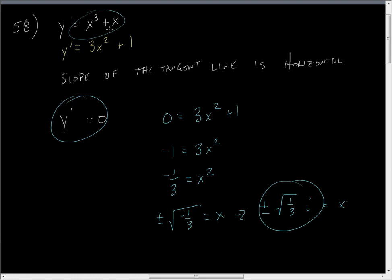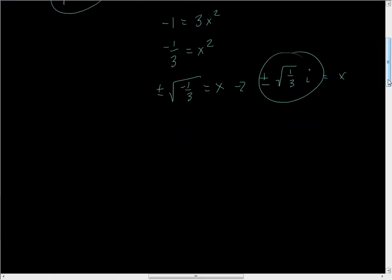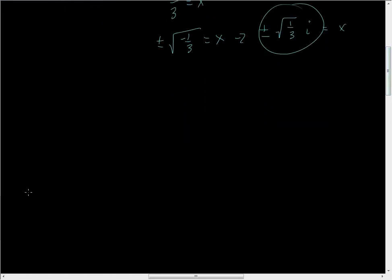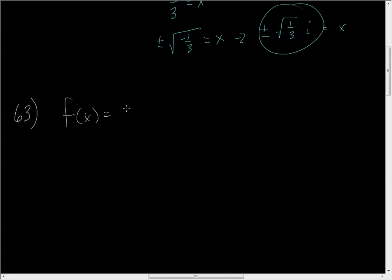So this function is always sloping upward. Let's move on to the next section. Number 63. We have the function f of x equals x squared minus kx, where we don't know k. We want to find k such that y equals 4x minus 9 is the tangent line to that function.